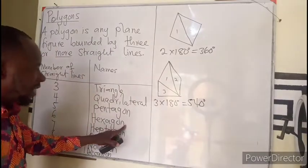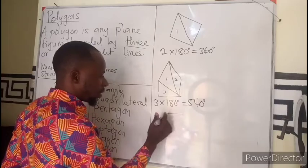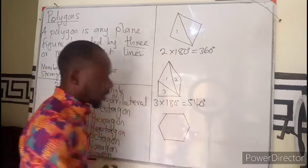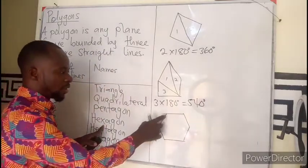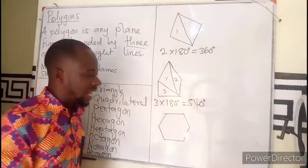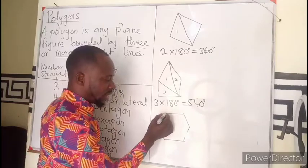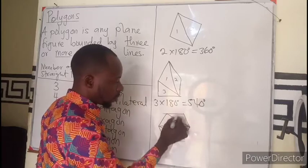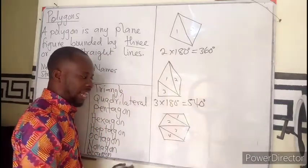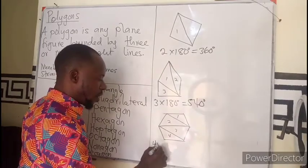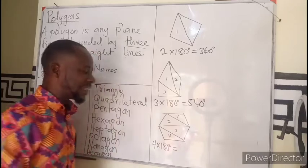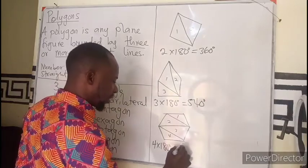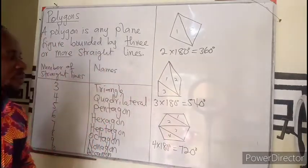Let's go a step further. This is a hexagon — a six-sided figure. Let's see how many triangles we can get by joining the corners or vertices. We get one, two, three, four triangles. So the sum of all angles is 4 times 180, which gives 720 degrees.